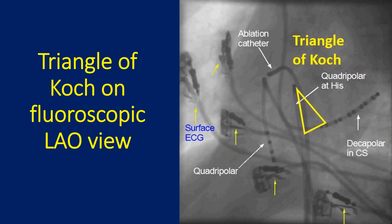The approximate position of the Triangle of Koch in the left anterior oblique fluoroscopic view is demonstrated. The tip of the quadripolar His-bundle catheter marks the approximate position of the apex of the triangle. The proximal portion of the His-bundle catheter runs roughly along the eustachian ridge and tendon of Todaro. The decapolar catheter in the coronary sinus identifies the base of the Triangle of Koch. The tip of the ablation catheter is seen well away from the tip of the His-bundle catheter to avoid ablation in the region of the compact AV node while ablating for supraventricular tachycardia.